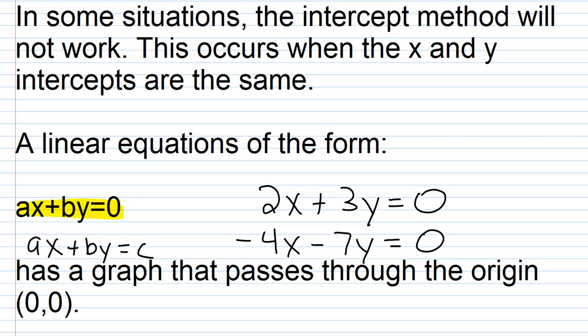If you have something like 2x plus 3y equals 0, or maybe negative 4x minus 7y equals 0, whatever it is, the c term is going to be 0. When that happens, you have a graph that passes through the origin at the point (0,0), so your x and y intercepts are going to be the same—they occur at (0,0).